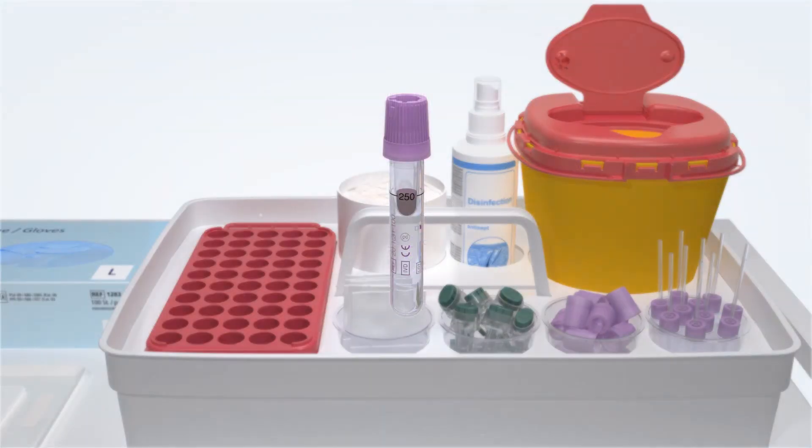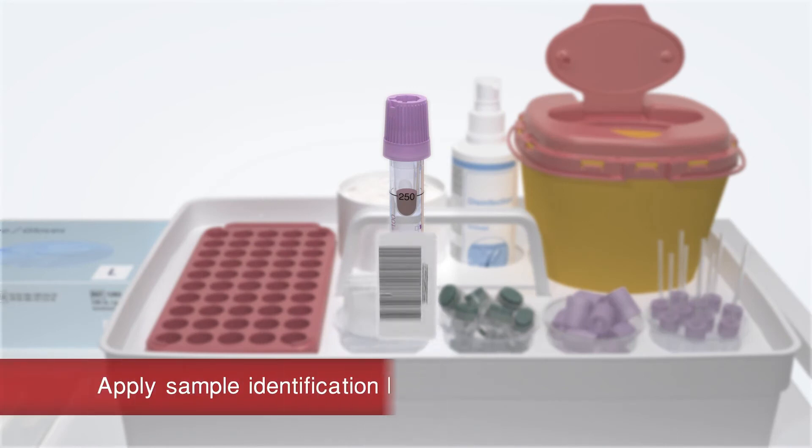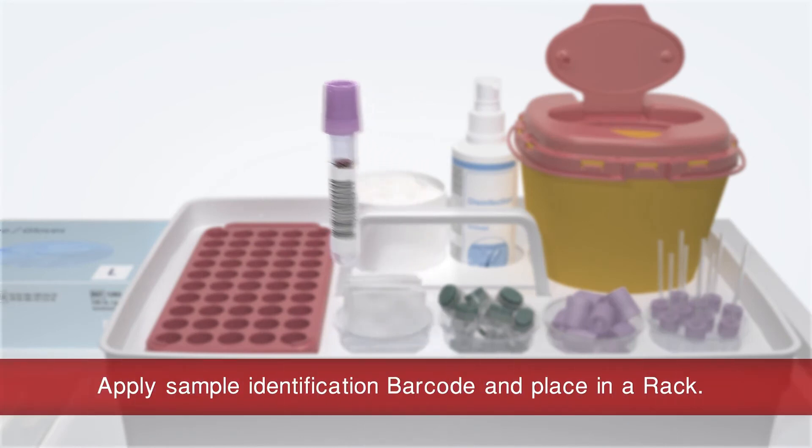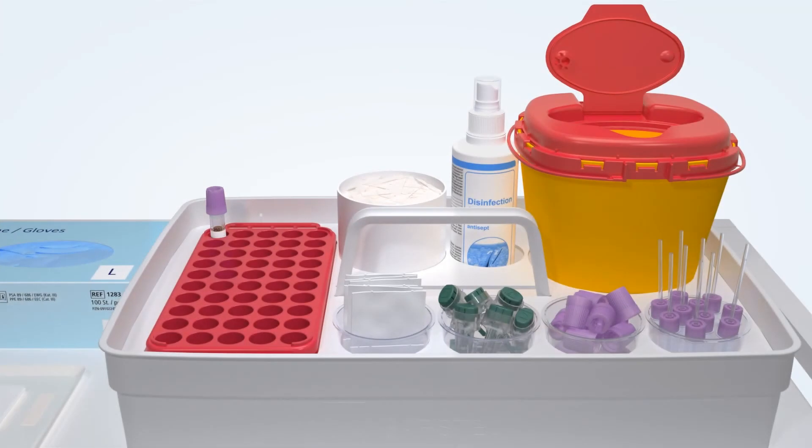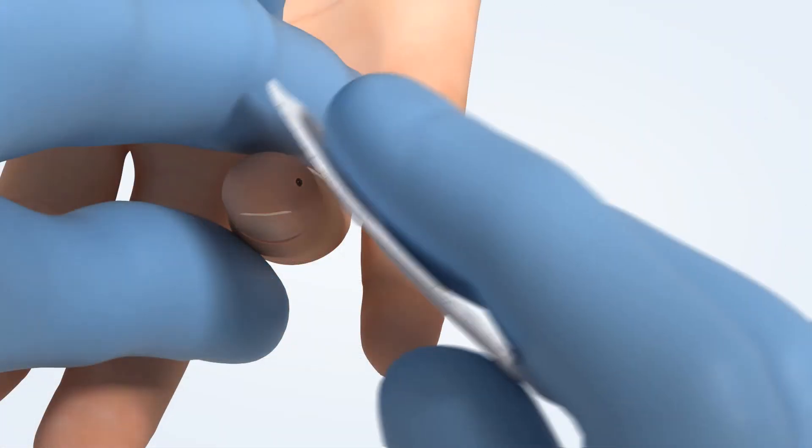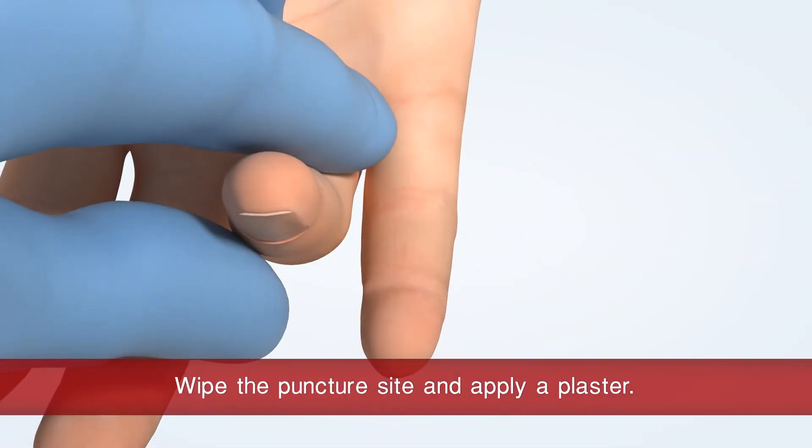Affix the patient label on the Microvette APT and place it in an S-Monovette rack. Wipe the puncture site with a swab and apply a plaster.